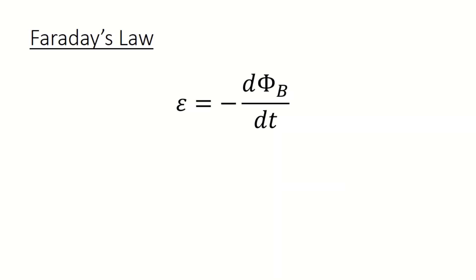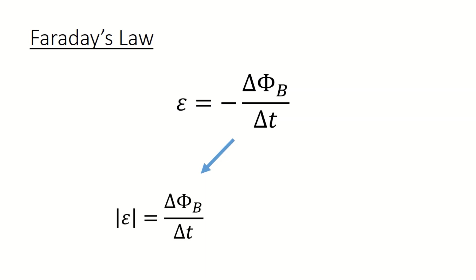To make things simple, we will replace d phi_B by dt with delta phi_B by delta t. So there are two things we will talk about from this equation: the first is electromagnetic induction and the effect of the change in magnetic flux on the induced emf; the second is Lenz's law and the reason why there is a negative sign in this equation.